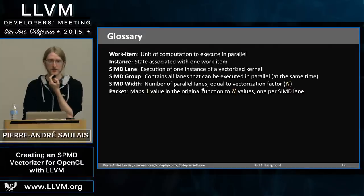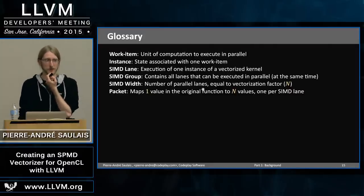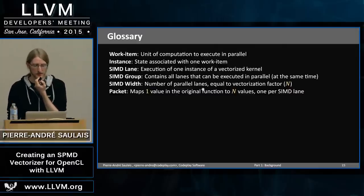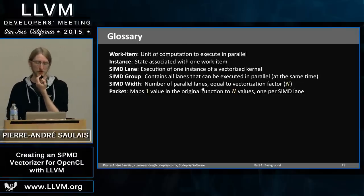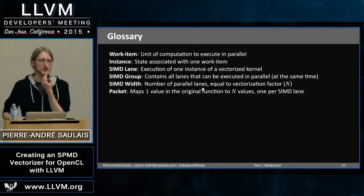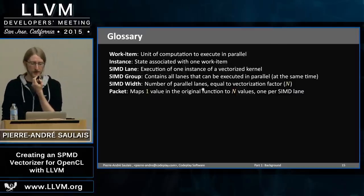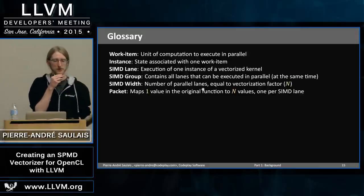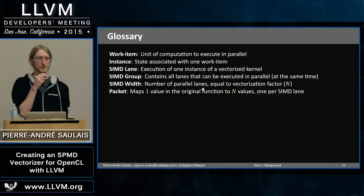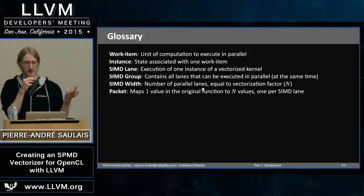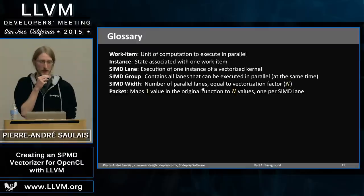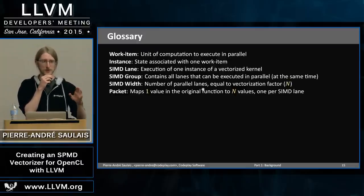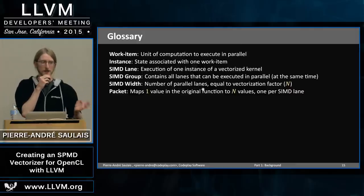Before implementing the vectorizer, let me introduce key terms. A work item is a unit of computation. An instance is the state associated with one work item. A lane is one execution of your program after vectorization. A SIMD group is all lanes executed in parallel. The width is the number of lanes. A packet is the mapping between original values in a function and the n values — one for each lane — after vectorization.